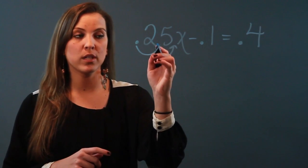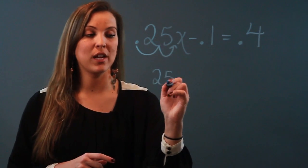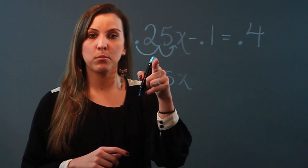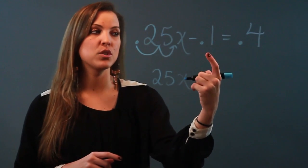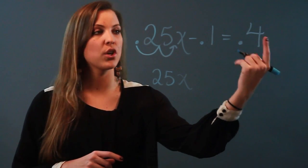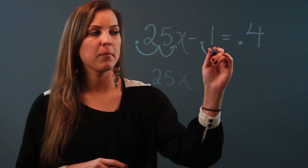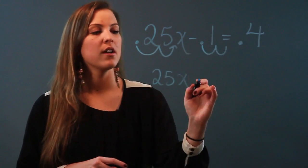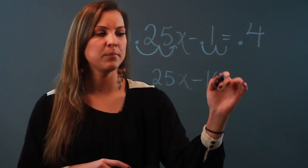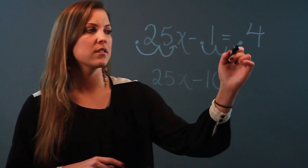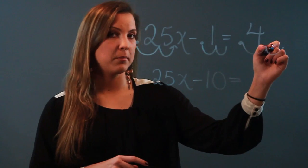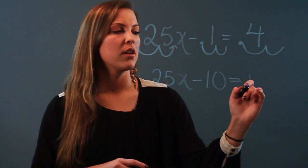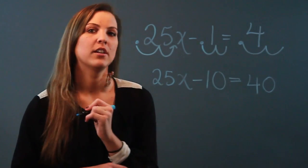I'm going to make 0.25 into just 25x. But if I move two spaces here, I have to move two spaces in every single term. So my 0.1, I'm going to go one, two, and that empty space right there has got to be filled with a zero. So that became minus 10 equals, one two, that empty space is also going to be filled with a zero, so that becomes 40.